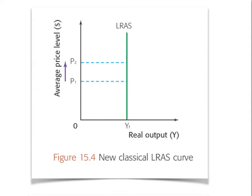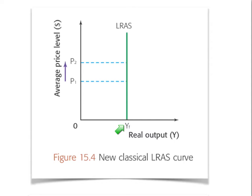I like to refer to this as the economy working at full capacity, which means it reflects a natural rate of unemployment. Full capacity means as many of the factors of production that can be employed at any one given time are indeed functioning to their full capacity. The LRAS curve is perfectly inelastic or vertical at what is known as the full employment level of output, represented by YF. This full employment level of output represents the potential output that could be produced if the economy were operating at full capacity.